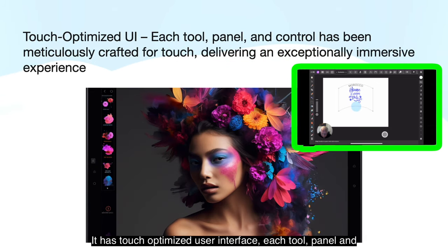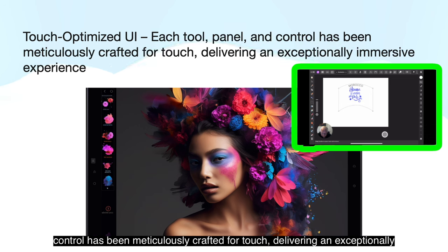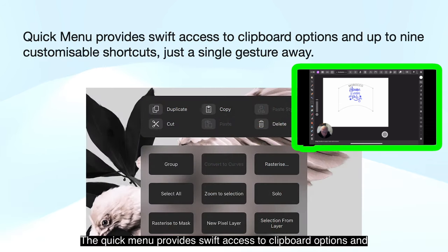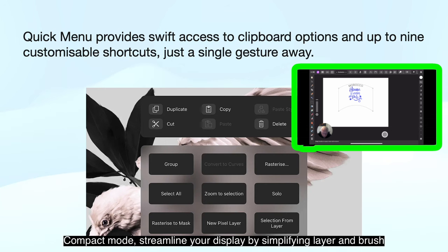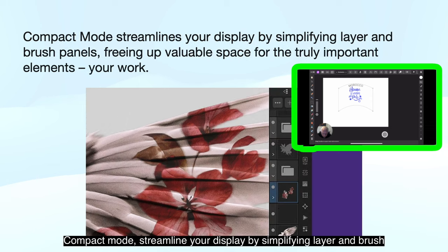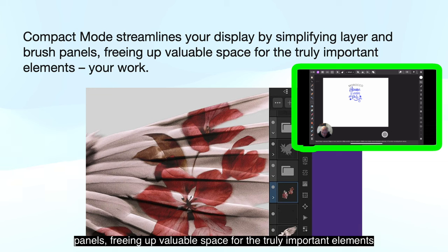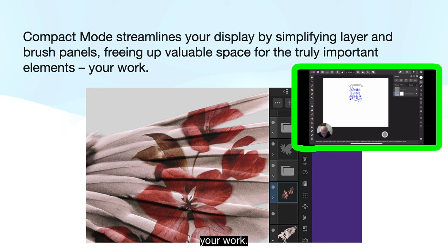It has a touch-optimised user interface. Each tool, panel, and control has been meticulously crafted for touch, delivering an exceptionally immersive experience. The quick menu provides swift access to clipboard options and up to 9 customisable shortcuts, just a single gesture away. Compact mode streamlines your display by simplifying layer and brush panels, freeing up valuable space for your work.